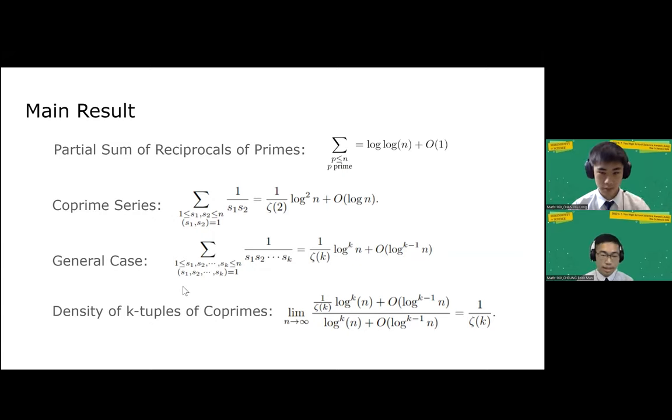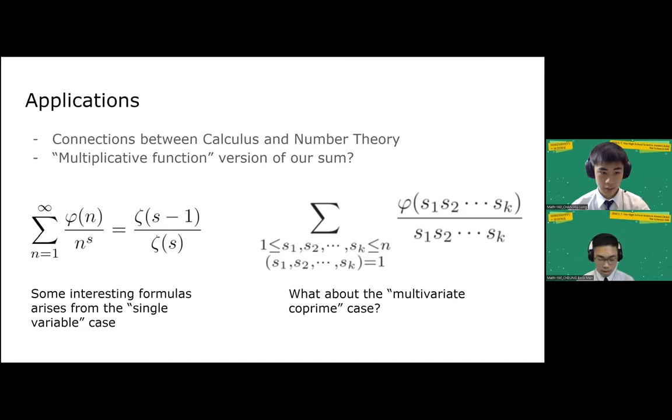Finally, we extended our research into the density of k tuples of co-prime, which we deduced to be 1 over zeta of k. So our research actually has some significance on different topics, like we linked calculus with number theory. Harmonic theory allows us to link sequences of numbers to familiar functions in calculus, like counting numbers to logarithm, and also the Riemann zeta function to sequences of nth powers.